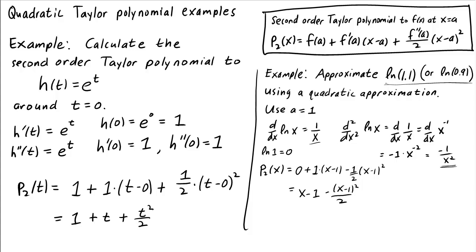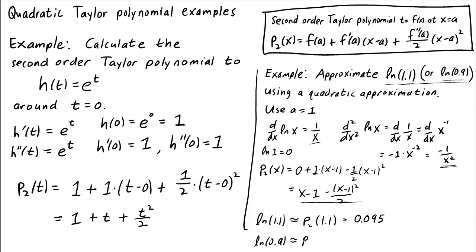Now we can approximate our values. ln of 1.1 is approximately equal to p2 of 1.1, and if you plug in 1.1 into this formula, you get 0.095. Or if you were asked to approximate ln of 0.9, you could plug 0.9 into our second order Taylor polynomial, and you would get negative 0.105.